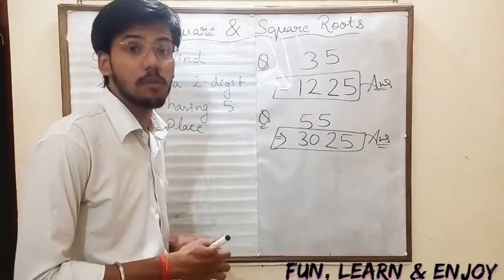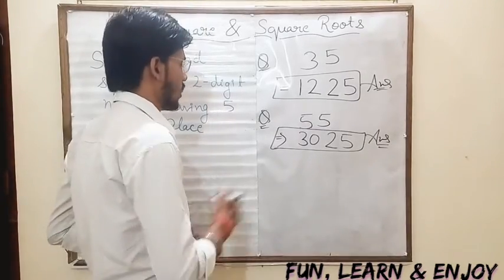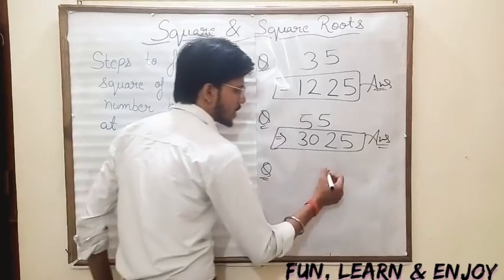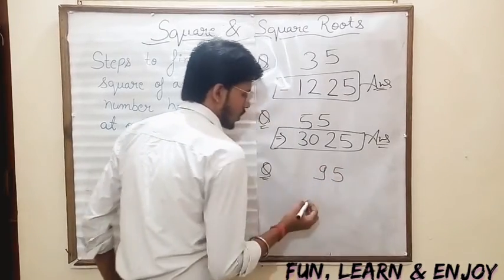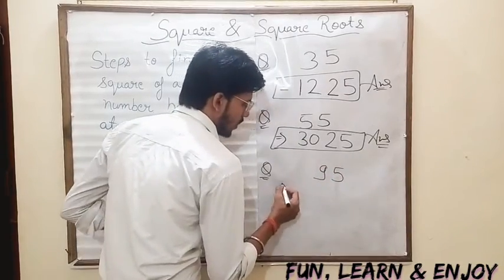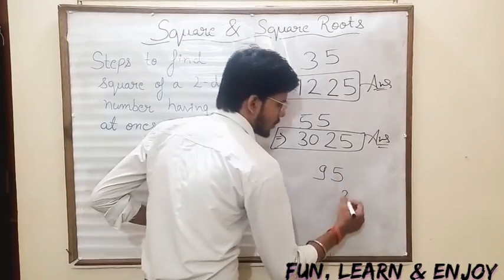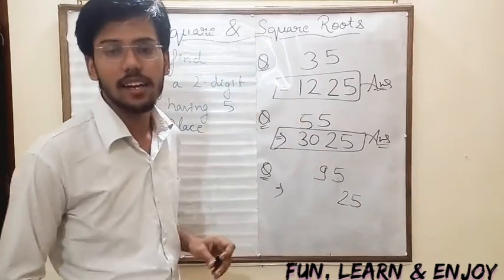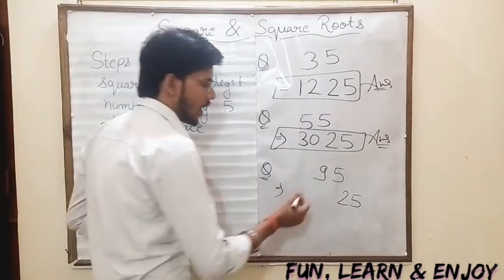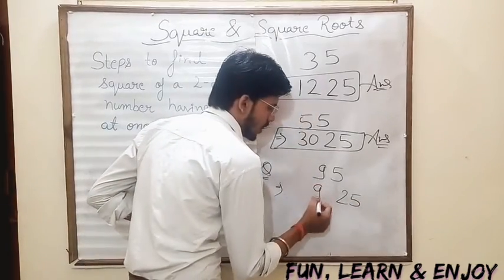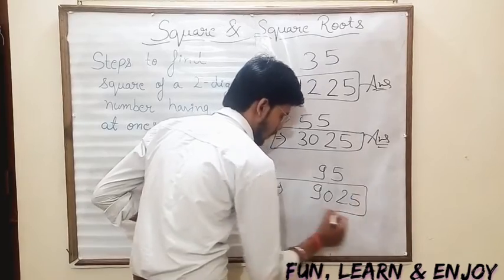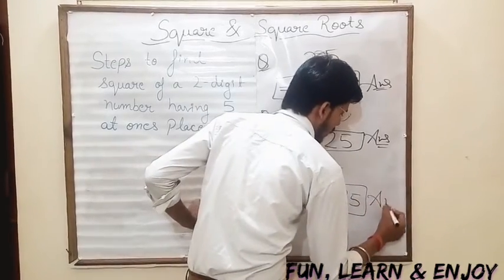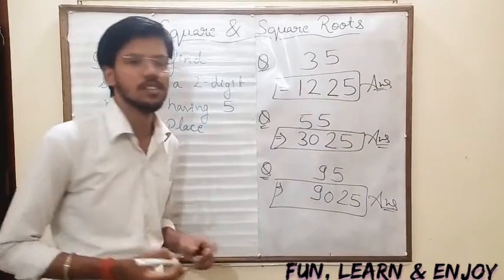Let's take one more number — suppose that is 95. So again, 5 fives are 25, and after 9 comes 10, so 9 multiplied by 10 is 90. This is the answer: 9025.